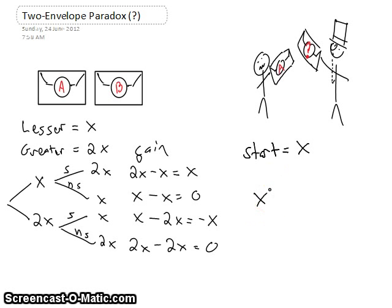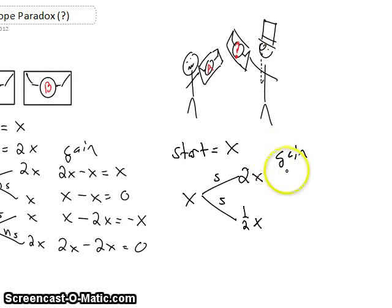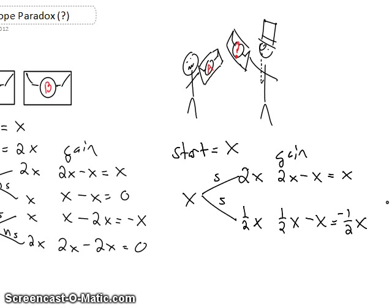Here's our x dollars, and we have a choice. If we choose to switch, we'll get either 2x dollars or half x dollars. Our gain is going to be 2x take away what we had to give up, which was x dollars, for a gain of x dollars — or we'll get half x dollars take away what we originally had, for a loss of one-half x dollars. In this case, it makes sense to switch, because you stand to gain more than you lose and there's even odds of both. So we're going to gain x or lose half x.